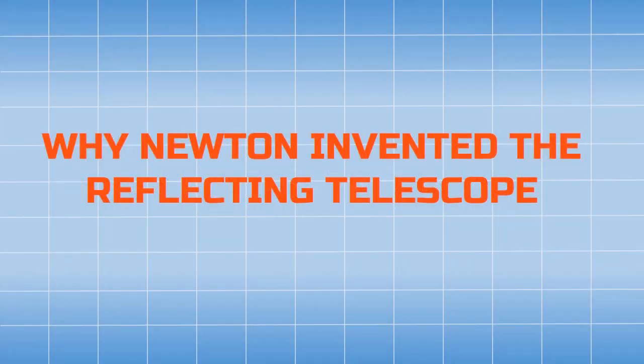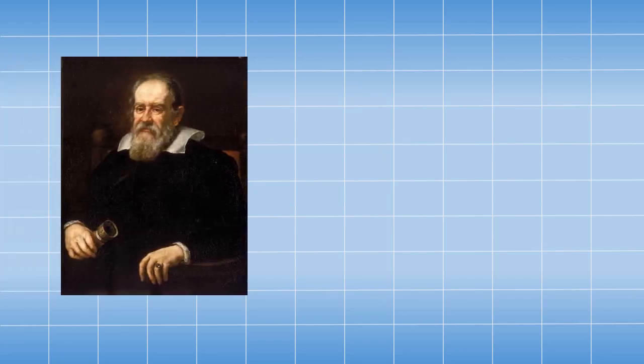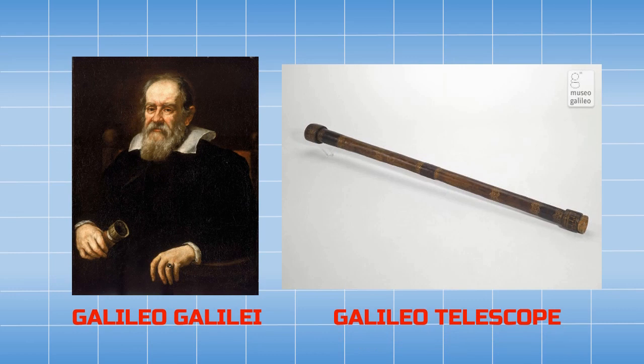In today's video we will see why Newton invented the reflecting telescope. As we know, earlier telescopes used to be refracting telescopes. In 1609, Galileo Galilei invented the refracting telescope and was the first to introduce his version to the public and use it for astronomical discoveries.